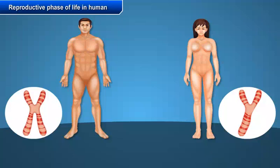A female cell has two X chromosomes, while a male cell has one X and one Y chromosome. Generally, the gametes have only one set of chromosomes. The unfertilized egg always has one X chromosome, and sperms are of two kinds: one with the X chromosome and the other with the Y chromosome.